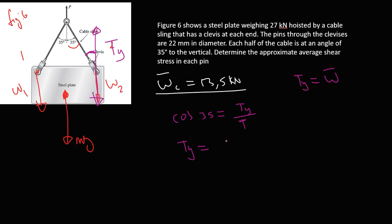T equals Ty over cos(35°). So T equals 13.5 kN divided by cos(35°). Working this with the calculator gives us an answer of 16.48 kN and so on. I'll just keep it at 16.48 kN, stored in my calculator.